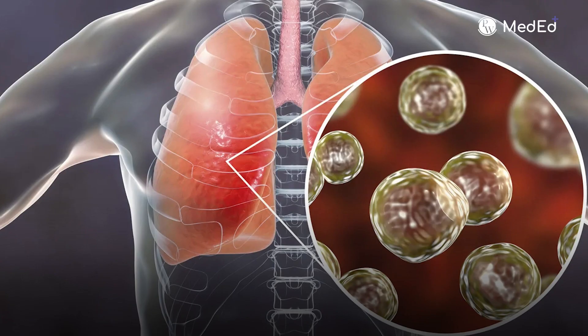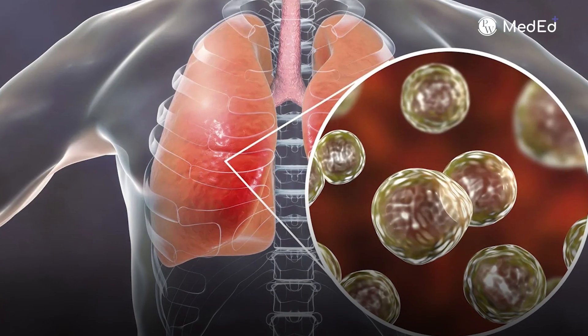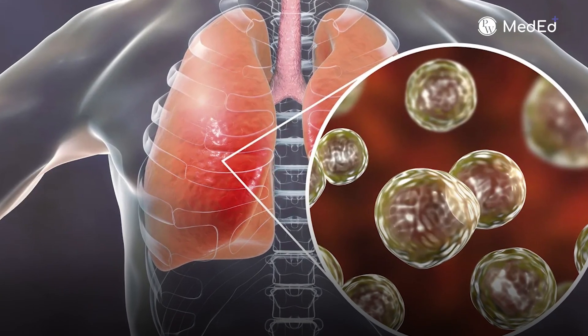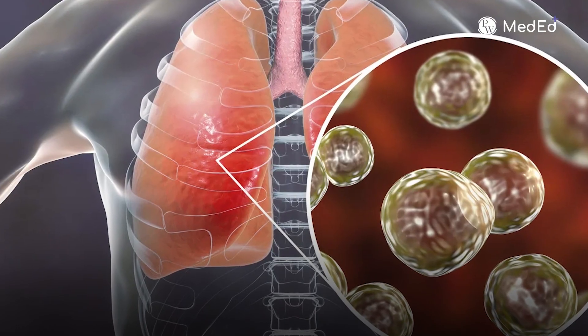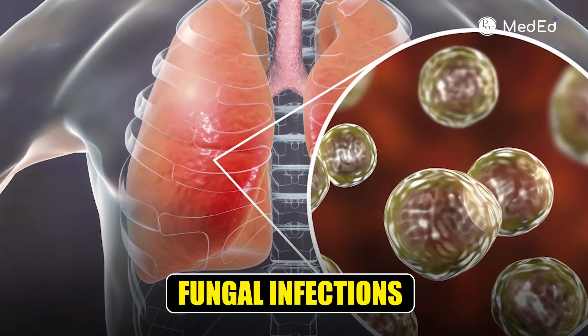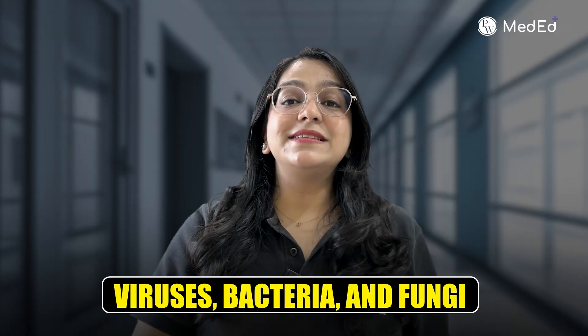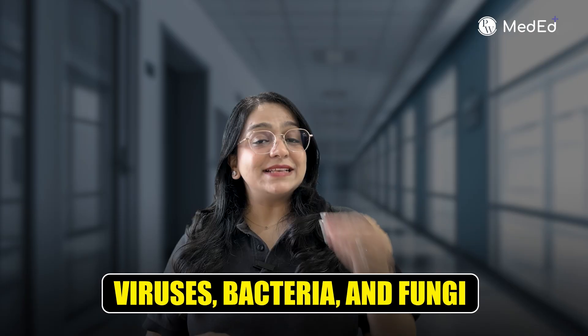One important thing to note is that fungi are complex organisms, and they tend to cause chronic infections. Whenever there is an acute infection, it is more likely to be bacterial or viral. Whenever it is a chronic infection — such as chronic meningitis — it is usually due to fungal infections. Fungi do not typically cause acute infections, and that is a major distinguishing feature.